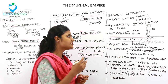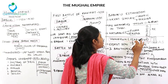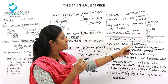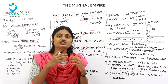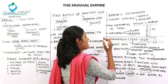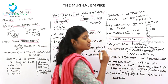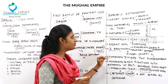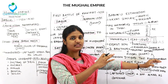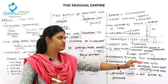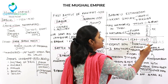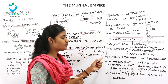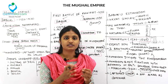Humayun ruled from 1530 to 1540. He is the eldest son of Babur and his name denotes 'fortunate,' but unfortunately he was not fortunate. Humayun had three brothers — Kamran, Askari, and Hindal — and he divided the kingdom among them: Kamran was given Kabul and Kandahar, Askari was given Sambhal, and Hindal was given Alwar. This was considered a great blunder by Humayun.